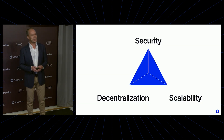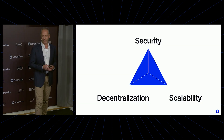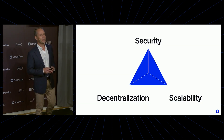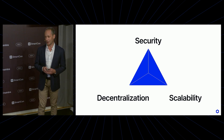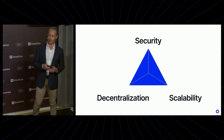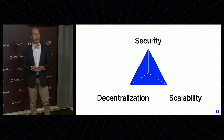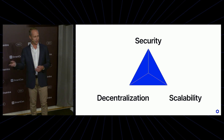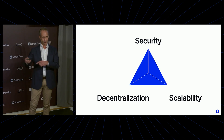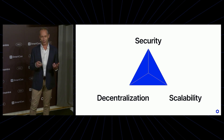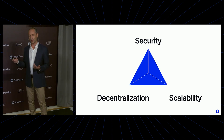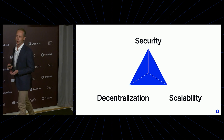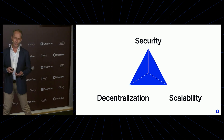Here's another triangle that you may be familiar with — the trilemma of blockchain: security, decentralization, and scalability. Legend has it that you can only choose any two. The same trilemma seems to apply to some extent to confidential computing technologies.